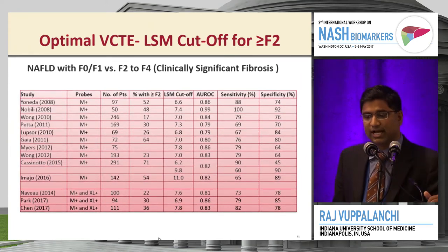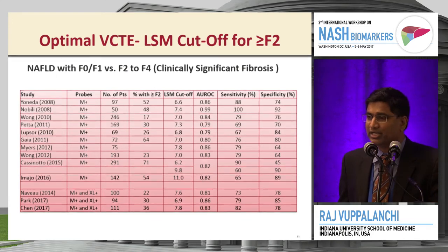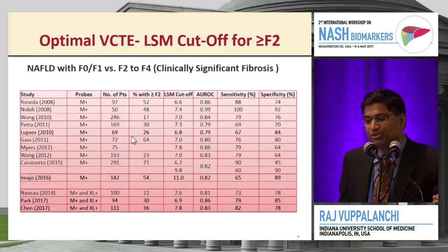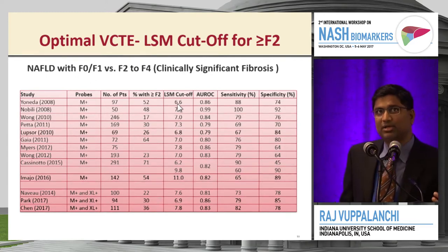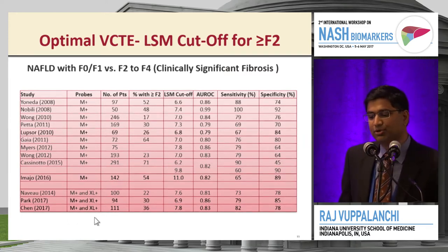I compiled all studies reporting a correlation between liver stiffness using vibration-controlled transient elastography. Most earlier studies used the medium probe only — the extra-large probe was only approved in the U.S. around 2013, so any study before that used only the medium probe. In NAFLD, skin-to-liver capsule distance is much higher, and earlier studies weren't even reaching the right depth. This explains variable cutoffs across studies. The table shows proportion of patients with F2 or greater in each cohort, AUROC, sensitivity, and specificity, with variation in optimal LSM cutoff across both earlier and more recent studies using both probes.